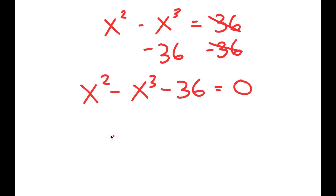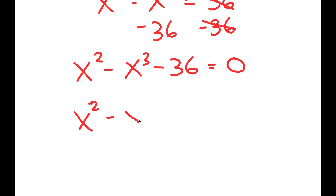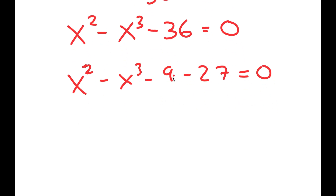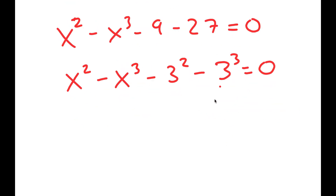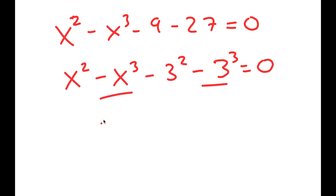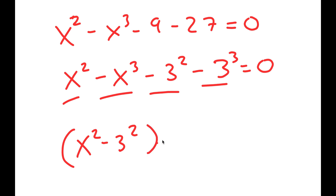Now I'm going to rewrite 36 as negative 9 minus 27. The reason I'm doing this is because 9 is the same thing as 3 squared, and 27 is the same thing as 3 to the power of 3. So I'm going to group together x cubed and 3 cubed, and x squared and 3 squared. So I get x squared minus 3 squared minus x cubed plus 3 cubed.